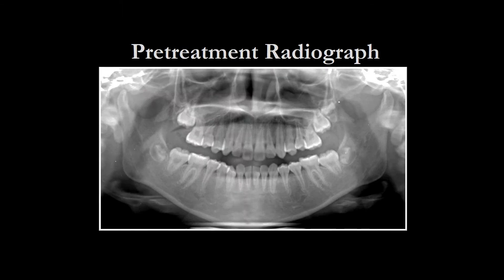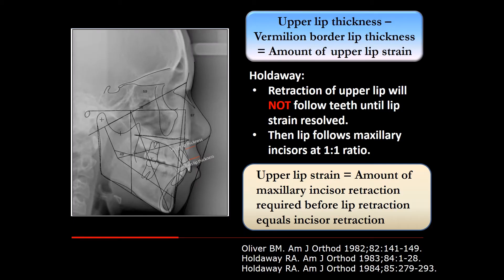This is her pre-treatment panoramic radiograph. This is her lateral cephalogram. Her upper lip thickness was 14 mm and the vermilion border lip thickness was 10 mm; therefore, the net upper lip thickness was 4 mm.